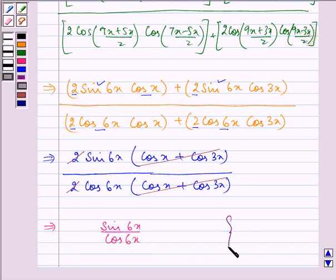Now, what does sin 6x divided by cos 6x mean? It means tan 6x, right? Now, here our x is 6x.